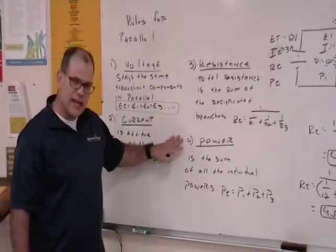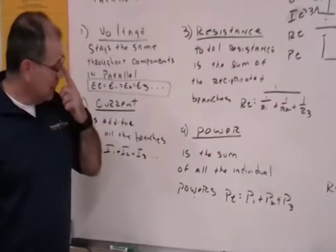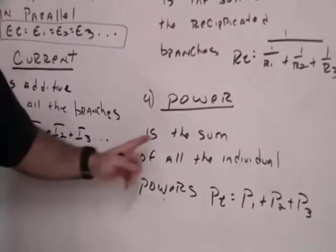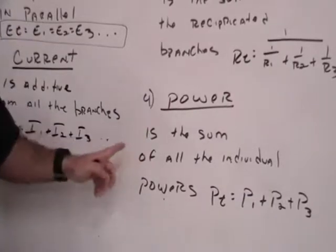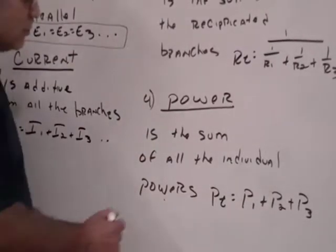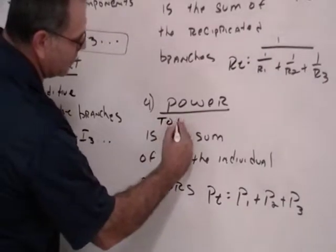As far as power, this is the last rule. Power in parallel is the same rule as power in series. The sum of the individual powers. Total power is the sum of all of the individual powers.